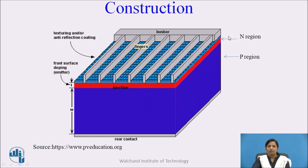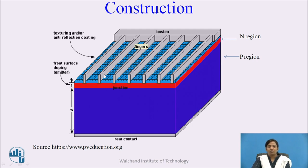The upper layer is the N-type semiconductor, and its layer is thin so that light can easily enter inside the material. Solar cells are metallized with thin strips, which are painted on the front and rear contact. These strips are called fingers and busbars, and their purpose is to conduct the DC power generated by the solar cell.